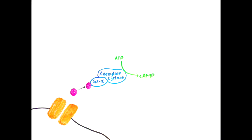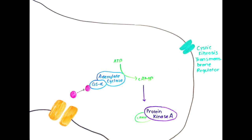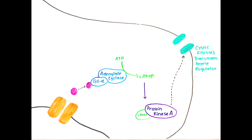Adenylyl cyclase catalyzes the conversion of ATP to cyclic AMP (cAMP), increasing intracellular levels of cAMP. cAMP then activates a protein called protein kinase A.